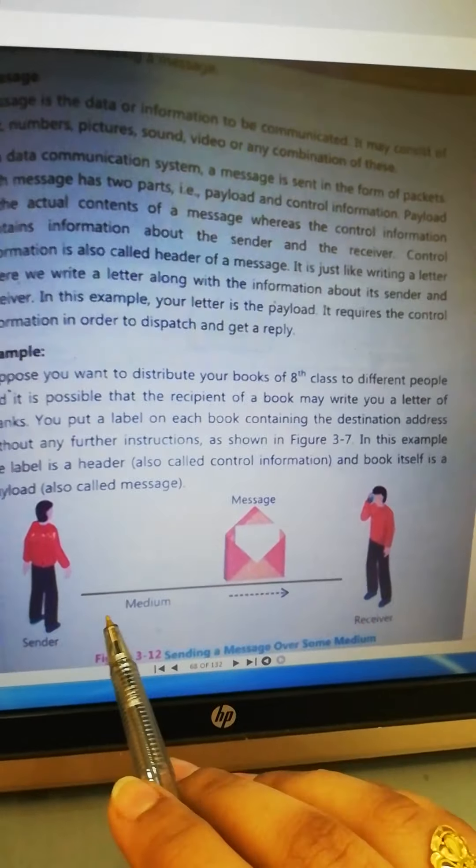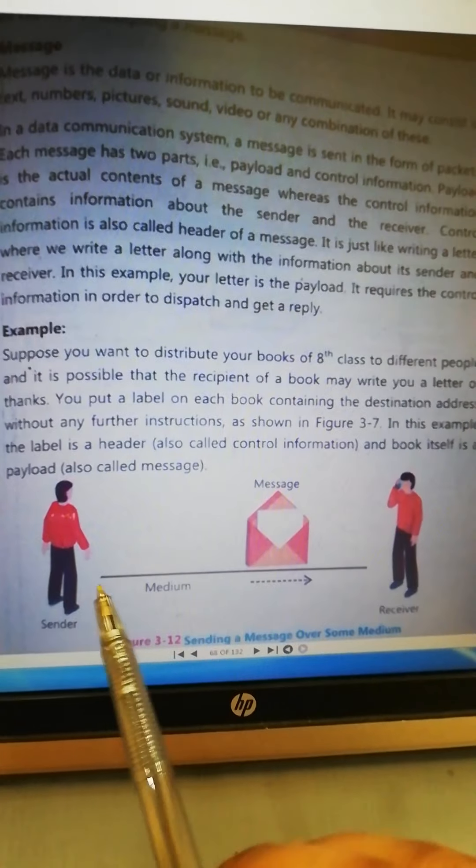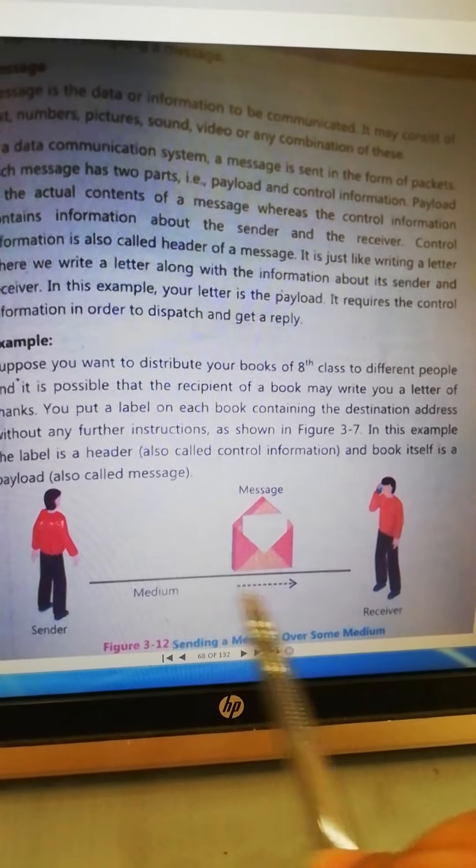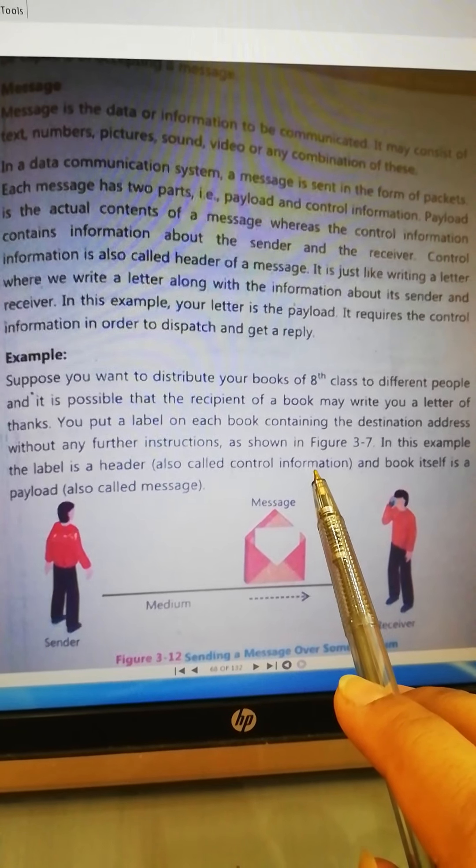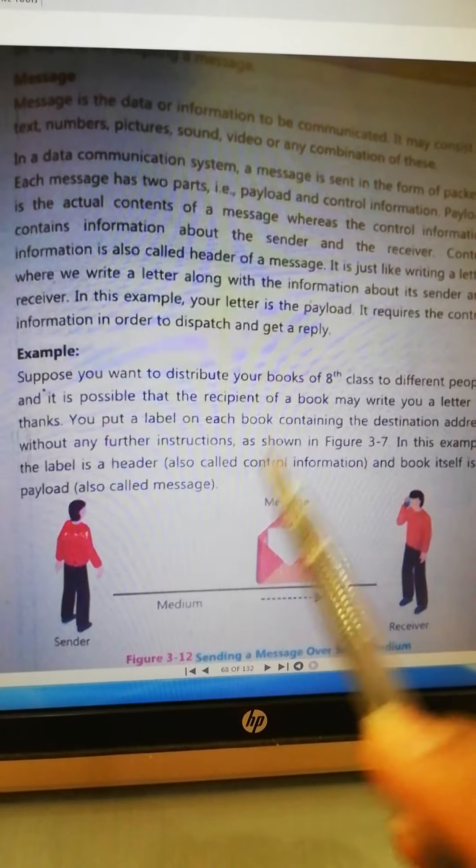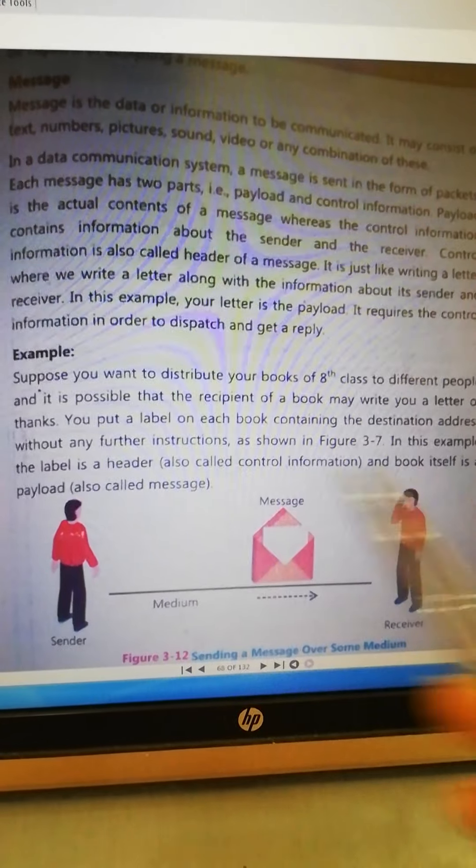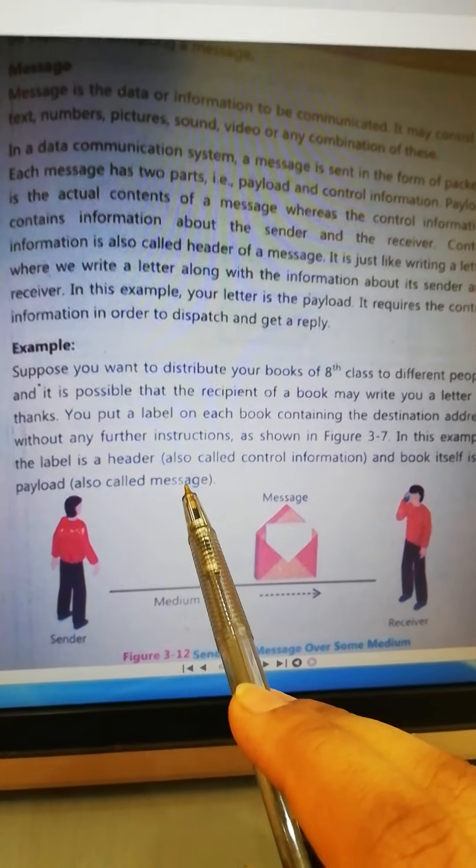Now, in this picture, you can see what the control information is a header. So, the sender and receiver, you can see all the information that you have sent to the sender and receiver. And the book itself is a payload, also called message.